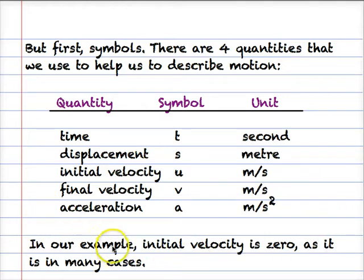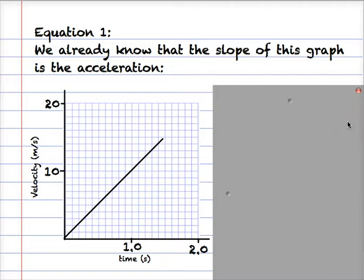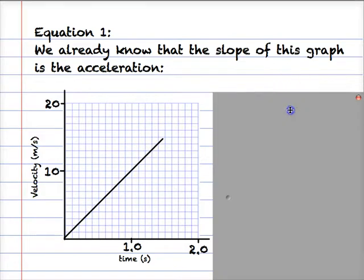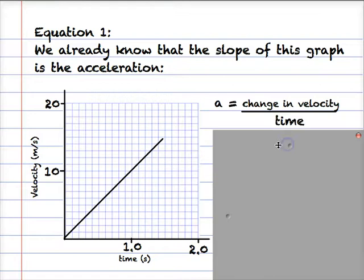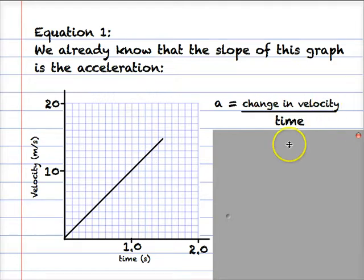In our example, and in many examples, the initial velocity u is zero. The first equation of uniformly accelerated motion is derived from the slope of the velocity-time graph. We already know the slope is the acceleration. So the slope is rise over run: the rise is the change in velocity, and the run is the amount of time it took to change the velocity. So we have the word equation: acceleration equals change in velocity over time.